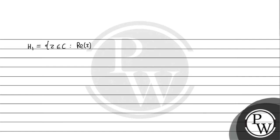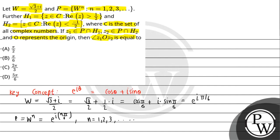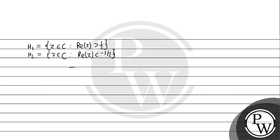h1 किस तरीके से है कि real part of z greater than 1 upon 2, और h2 में real part of z less than minus 1 upon 2। c set है complex numbers का। z1 जो है वो p intersection h1 में है, z2 जो है वो p intersection h2 में है, और O origin को represent करता है। इसको हम एक circle के form में देखेंगे।